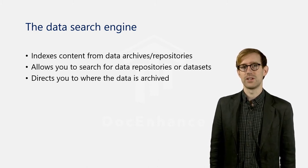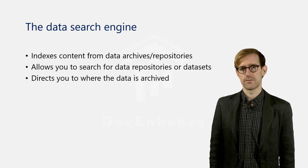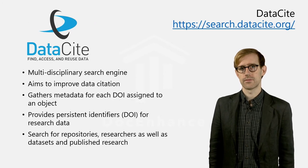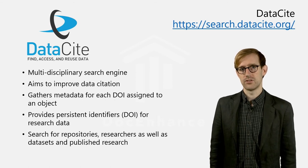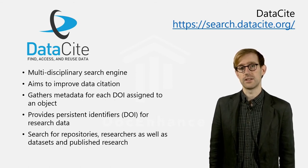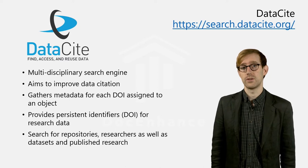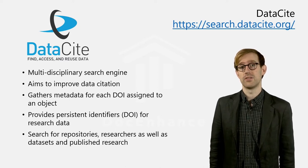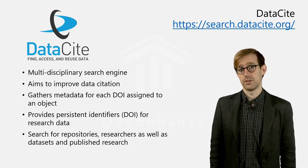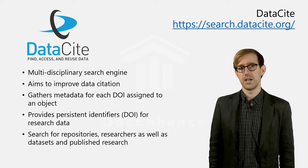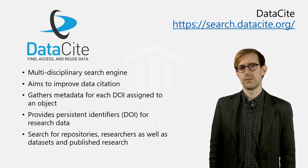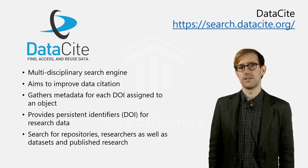In this session, we will be looking into three of the most commonly used data search engines. The first is called DataSight, a widely used multidisciplinary search engine that allows you to search for datasets equipped with a DOI as the persistent digital identifier. DataSight gathers metadata associated with existing datasets, and whenever a new dataset with a DOI link is posted, it will automatically become indexed in DataSight.